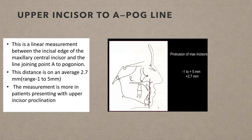Upper incisor to the A-Pogonion line shows the degree of protrusion of the maxillary incisor — about 2.7 millimeters. But I don't pick up this measure.